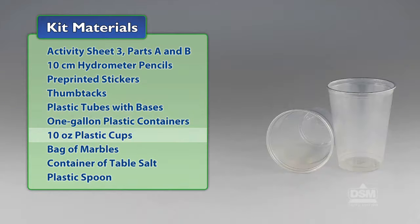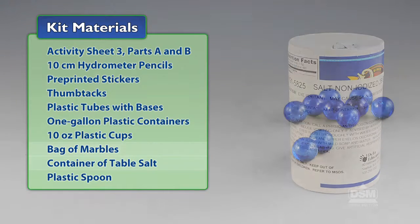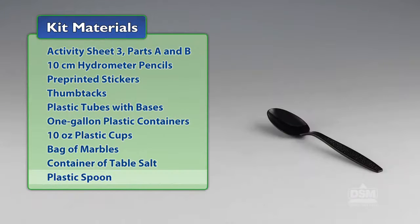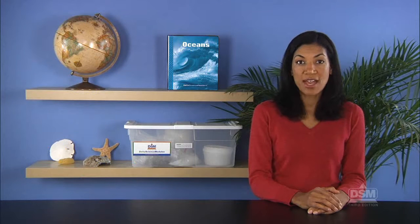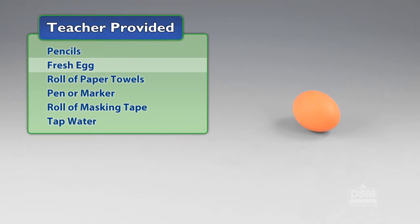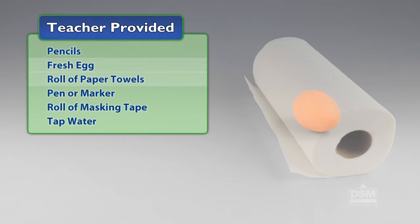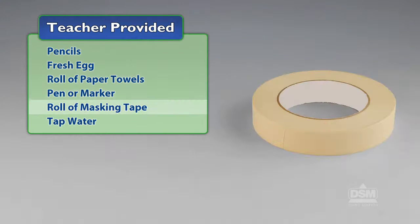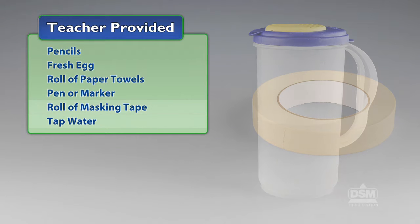You will also need 10-ounce plastic cups, a bag of marbles, a container of table salt, and a plastic spoon from the kit. You will also need to provide pencils, a fresh egg, a roll of paper towels, a pen or marker, a roll of masking tape, and tap water.